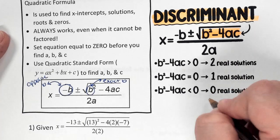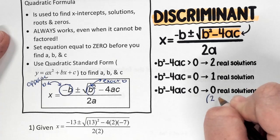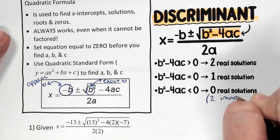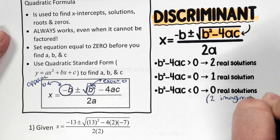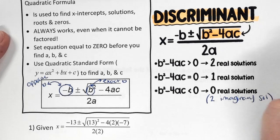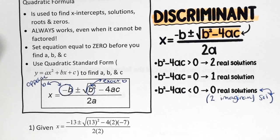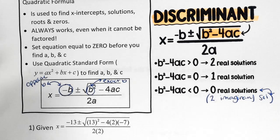When I say zero real solutions, I want you to realize that means two imaginary solutions. So yes, it's zero real solutions, but you do still have two imaginary solutions.